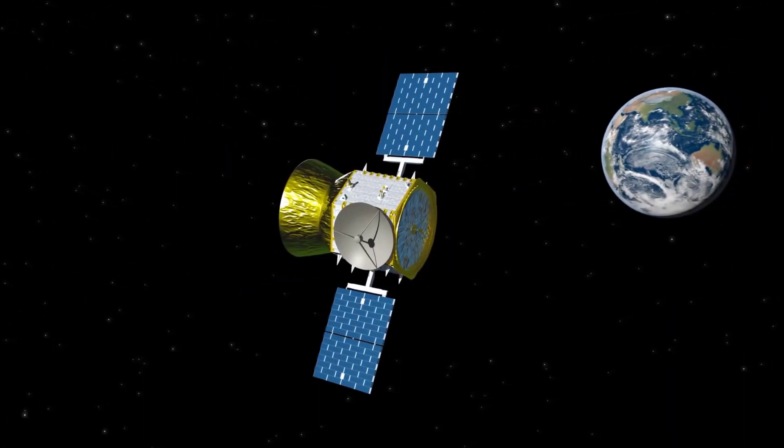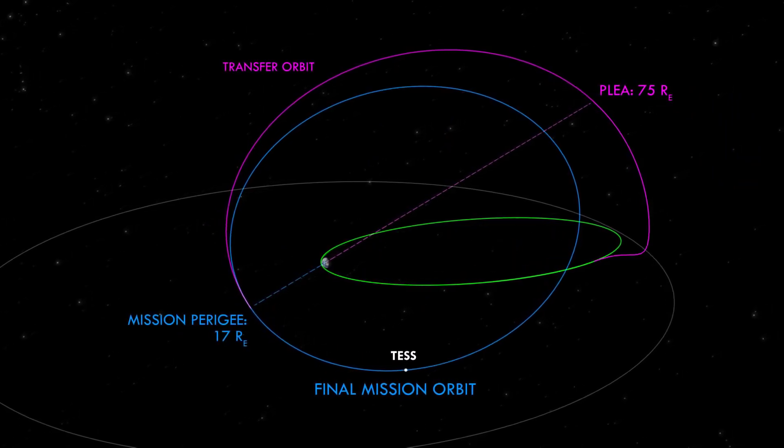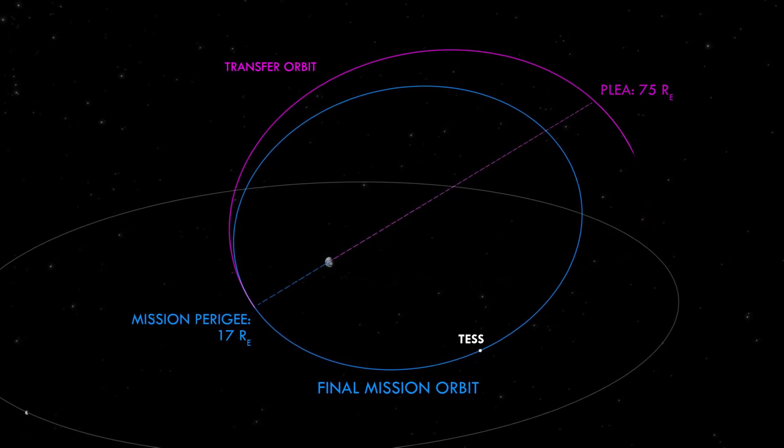One final adjustment is then made by TESS to set its orbital period to exactly 13.7 days, or half of the Moon's orbital period, which will keep this orbit stable for decades.